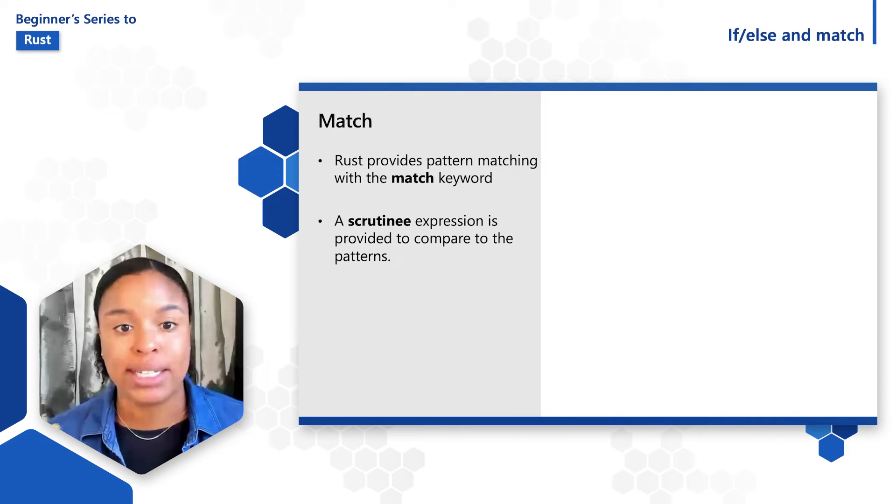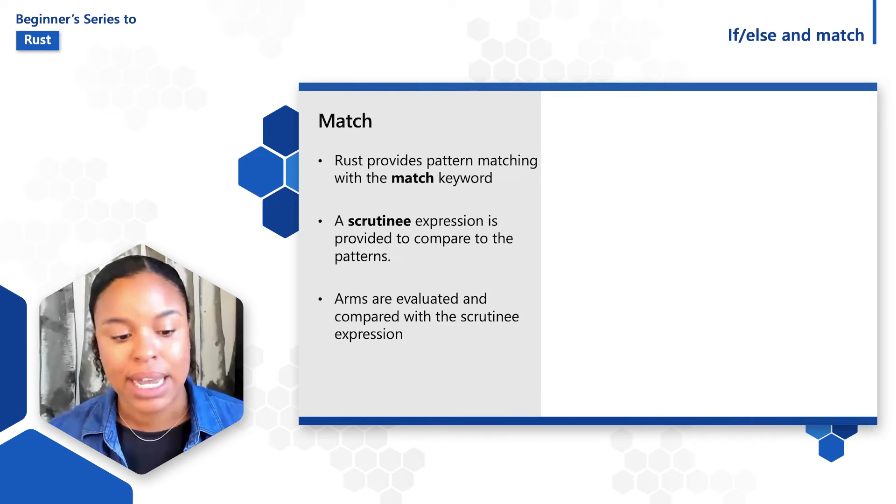Match has what's called a scrutiny expression, which is the value provided to compare to the patterns. Arms within the match expression are evaluated and compared with the scrutiny expression.